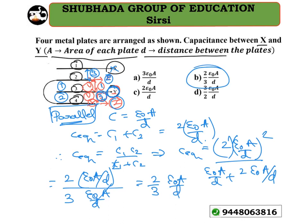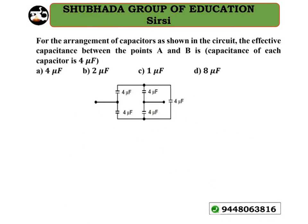Now look at the next problem. For the arrangement of capacitors shown in the circuit diagram, find the effective capacitance between points A and B, where each capacitor is 4 microfarads. It is difficult to rearrange these capacitors directly because there are multiple nodes. When no clear series or parallel connection is seen, check whether there is a Wheatstone bridge formation — and clearly this circuit is acting like a Wheatstone bridge.